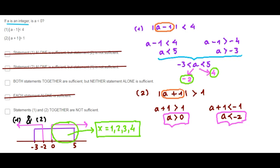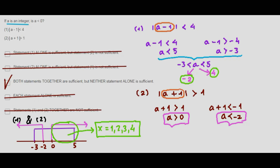Finally, the answer to the question 'is a negative?' is no — a is a positive integer. Both statements together are sufficient, but neither statement alone is sufficient. Therefore, choice C is correct.